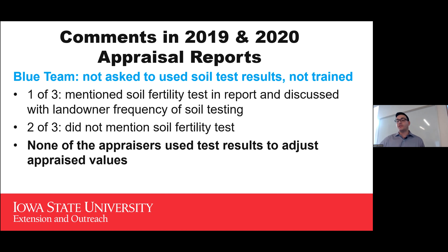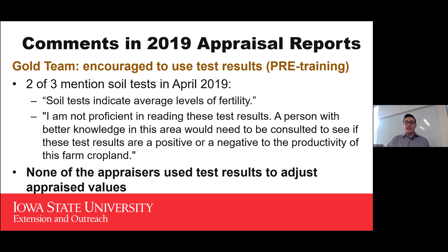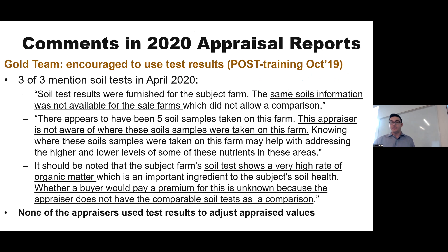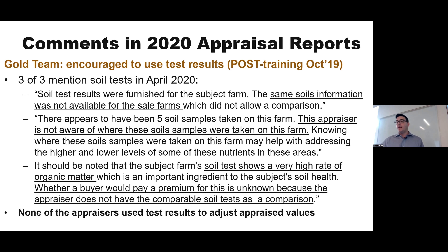The second farm — no-till and cover crops — has a much lower mean appraised value of $6,628 and $6,668, but it's a smaller farm at 73 acres with about a 58 CSR2 index. The difference between years was not significant. The third farm — conventional tillage, no cover crops over the past 10 years — had a similar CSR2 as the second farm and was slightly smaller. Its values of $6,900 and $7,000 are not very different from the second farm.